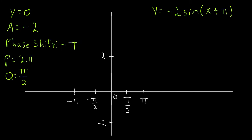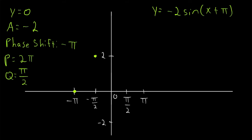Now we plot our points and sketch the graph. Our period starts at the phase shift negative pi, and since it's a sine function, it starts at the midline. Since our amplitude is negative, points that would normally be above the x-axis get flipped below it. So the next key point is at negative pi over 2, negative 2. Then it comes back up to 0, goes to its peak at 2, and returns to the midline, completing the period.